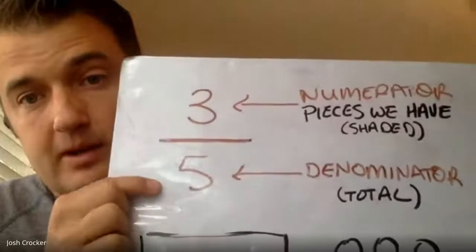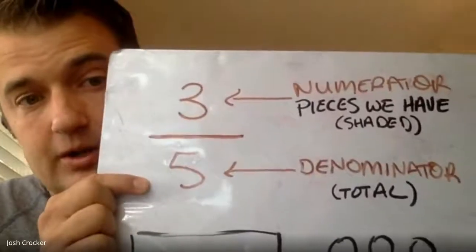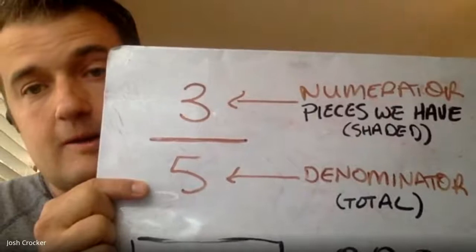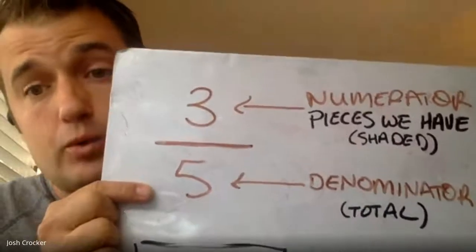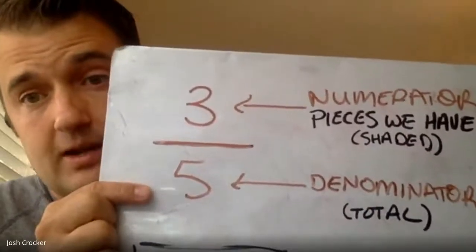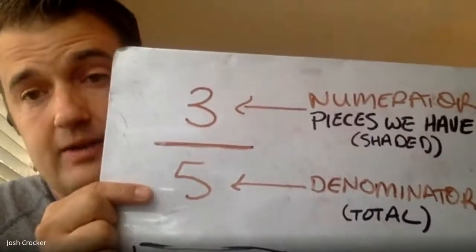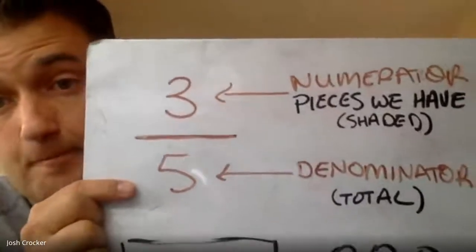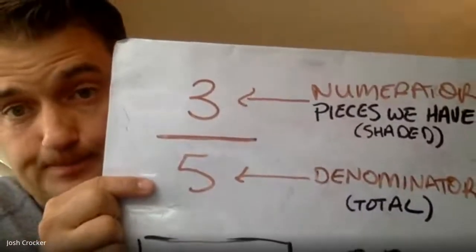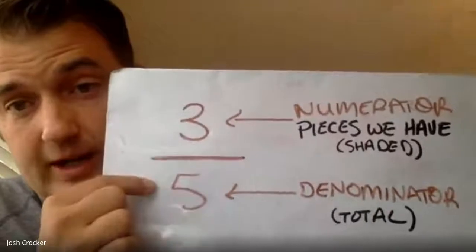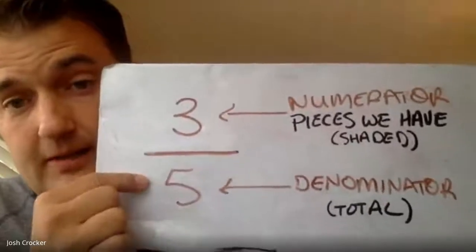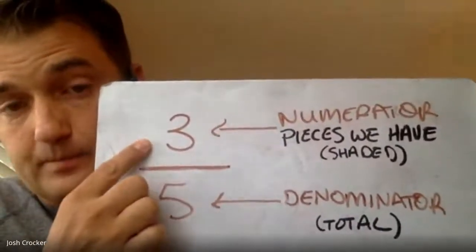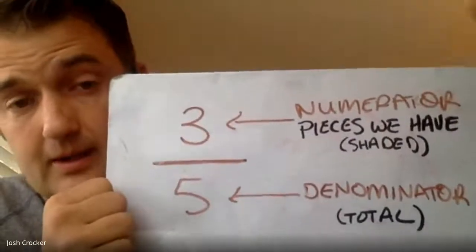The bottom number is called a denominator, and the denominator tells you the total pieces. It's not what you have — it's the whole, it's 100%. It's if all of them were there. So in this fraction, there were five pieces and we have three, so two of them are gone.